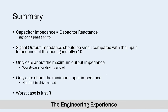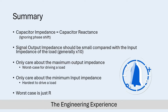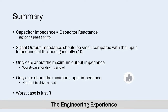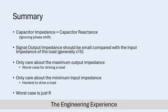Here is a short summary of the paragraph in question. The key points are that we can ignore the phase shift, so capacitor reactance is what we'll use to draw our conclusions. The signal output impedance should be small compared to the input impedance of the load. We look at maximum output impedance as the worst condition for driving a load, and minimum input impedance as the hardest load to drive, as it consumes the most current. The paragraph concludes that the worst-case input and output impedance is always R.